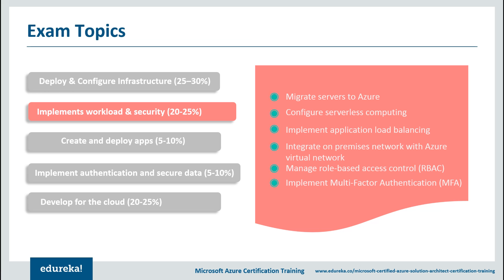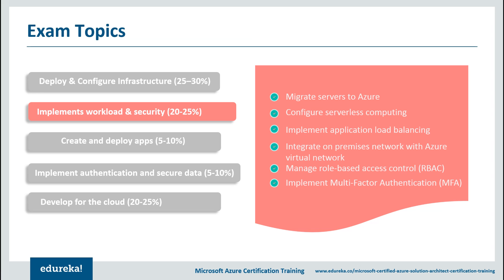The second most important task is implementing workload and security. You should know how to configure serverless computing, implement application load balancing, and manage Azure migration concepts. Since Azure is known for hybrid solutions, you should understand hybrid migration and hybrid cloud solutions available on Azure. You should also know how to integrate on-premise networks with Azure virtual networks, create custom roles, configure access to Azure resources, enable multi-factor authentication for Azure tenants, configure user accounts for MFA, and manage role-based access control.